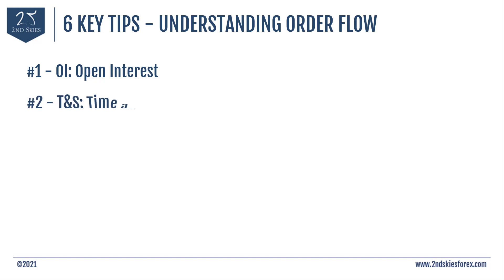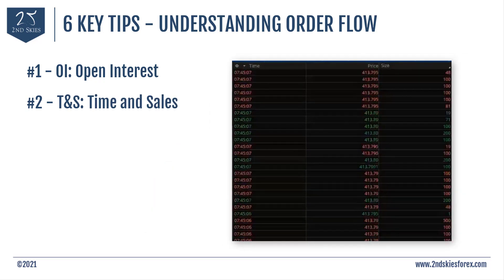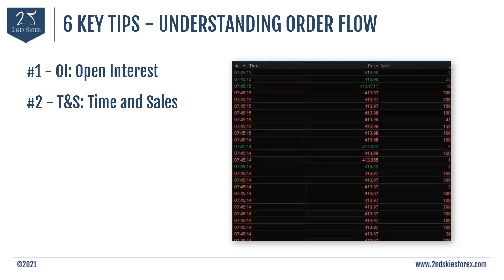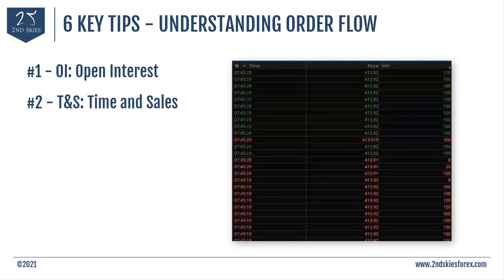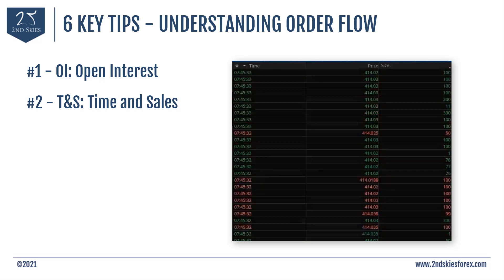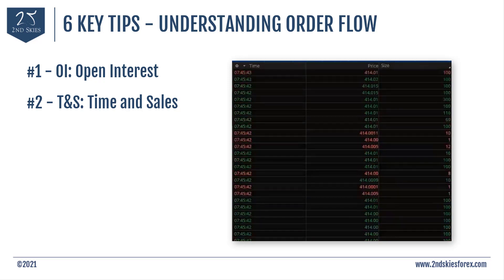Number two is T&S, time and sales. Almost any stockbroker worth their salt has time and sales available for the stocks they offer. This is the actualized order flow — at what price, for how much, and at what time. Your ability to read time and sales will give you an insight into order flow right now: if there are large orders coming in, whether the bids are absorbing the offers, if a breakout is likely or not. You'll want to learn to read time and sales and build your pattern recognition skills here.